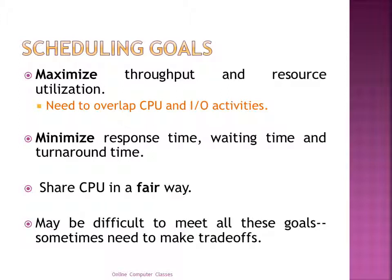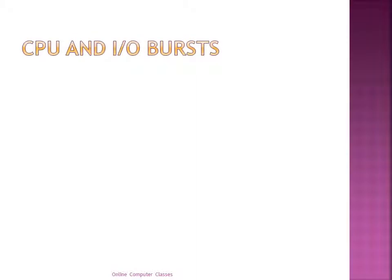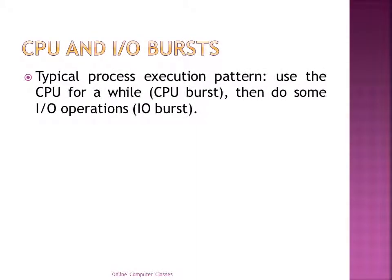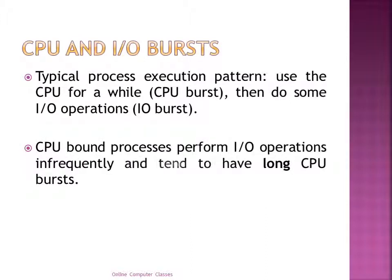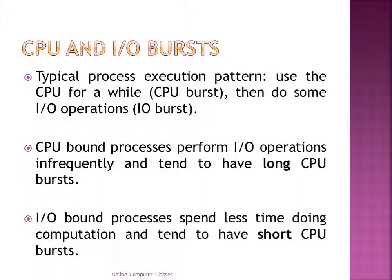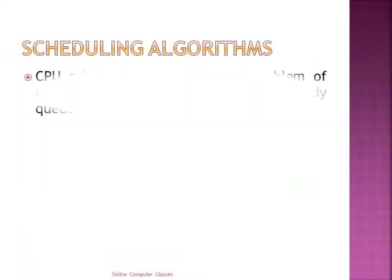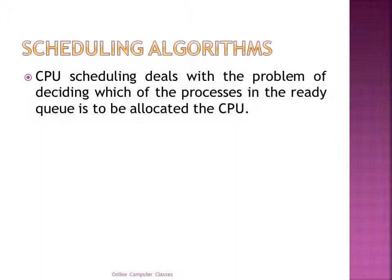Typically, a process's execution pattern alternates between CPU usage and IO operations. When a process uses the CPU for a while, that is called a CPU burst; when it uses IO operations, that is called an IO burst. CPU-bound processes perform IO operations infrequently and tend to have long CPU bursts. IO-bound processes spend less time doing computation and tend to have short CPU bursts.